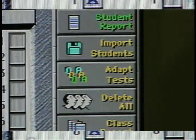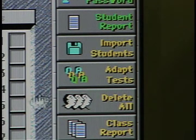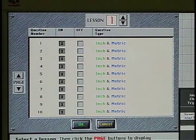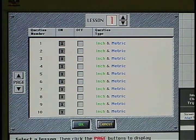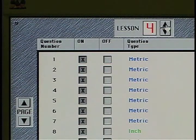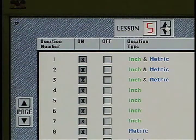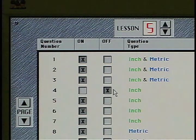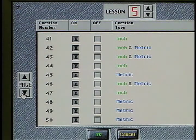The third level of instructor control is available on the adapt test screen. This password protected screen allows the leader to turn individual questions on or off for his class. Some questions are general and apply to both inch and metric students, while others will only be presented to students who will be working with inch or metric instruments. If the leader believes certain questions do not relate to their situation, those questions can be turned off. Turning a question off only affects students registered in this class. Other classes are not affected.